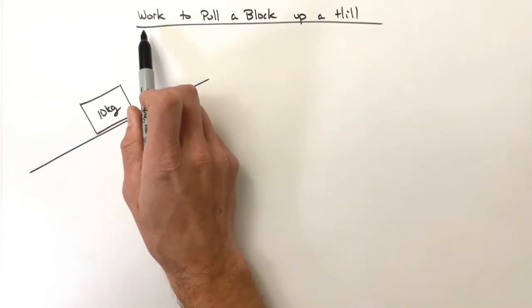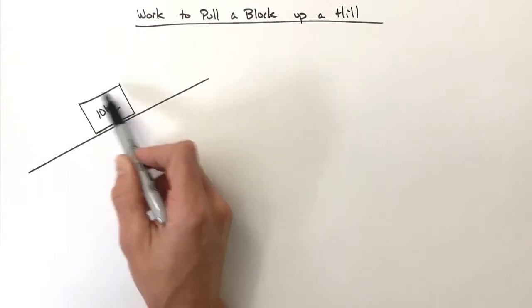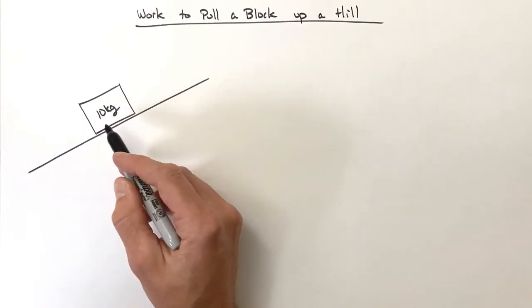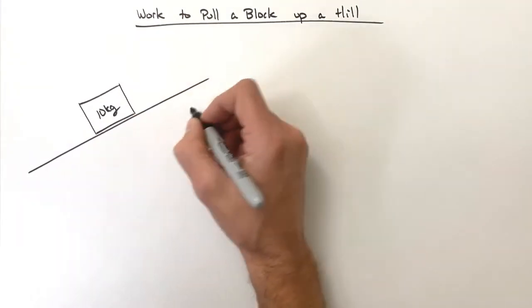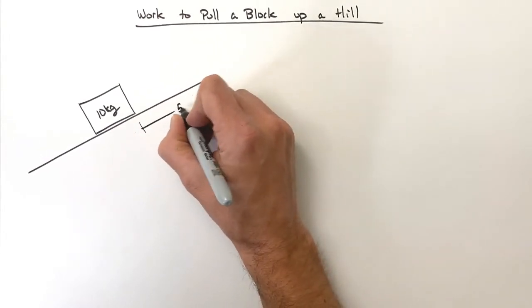Alright, in this problem we're going to take a look at the work required to pull a block up a hill. More specifically, we're going to look at the total work done on this block in pulling it up a hill. We've got a 10 kilogram block which we're going to pull or drag five meters up a hillside.